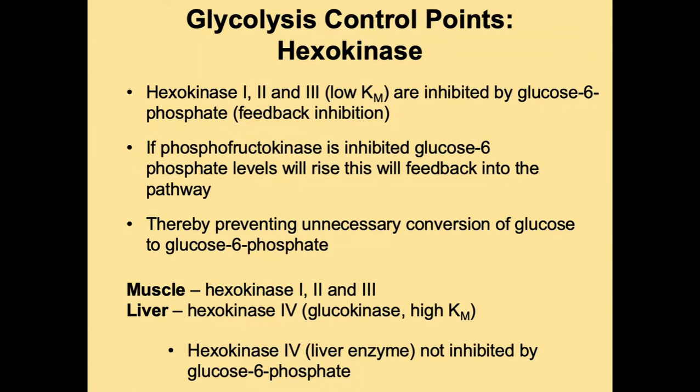The liver presents a different circumstance because it expresses hexokinase isoform 4, which is not inhibited by glucose 6-phosphate. Beyond differences in Km (affinity for glucose), hexokinase 4 is distinct from the other isoforms precisely because it is not subject to this feedback inhibition.